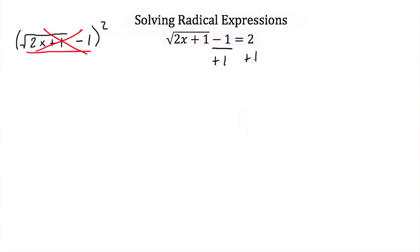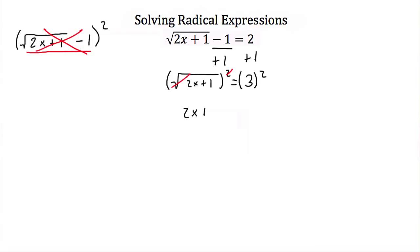So we add 1 to both sides, giving us the square root of 2x plus 1 is equal to 3. Now that the square root term is alone on one side, we can square both sides. Squaring the square root of 2x plus 1 cancels the square and square root, leaving 2x plus 1 on the left. On the right-hand side, 3 squared equals 9.